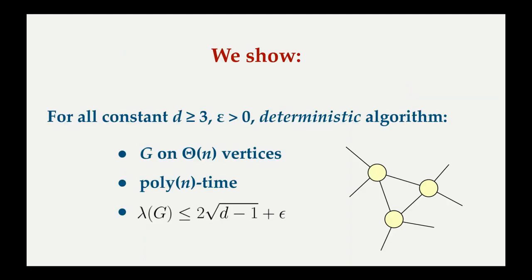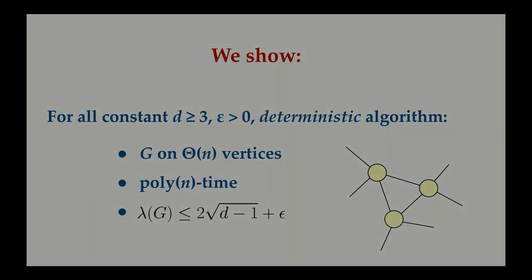To conclude, let's review our results. We showed that for all constant d ≥ 3 and ε > 0, there is a deterministic algorithm that produces a graph G on Θ(n) vertices in poly(n) time, whose spectral expansion is bounded by 2√(d-1) + ε. Our construction is based on a two-phase method. The first one produces a small graph by weakly derandomizing a known result that says uniformly random d-regular graphs are near-Ramanujan. The second phase uses 2-lifts and properties about small cycles to boost the number of vertices to the desired one, while keeping the target spectral expansion. Thanks for listening.